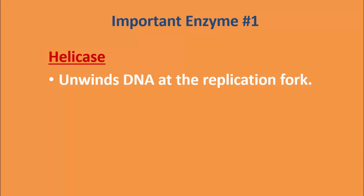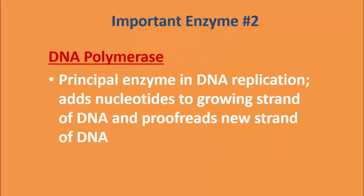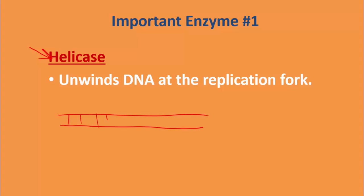Important enzyme number one is helicase. Helicase unwinds DNA at the replication fork — think of helicase as a zipper. If DNA were a ladder, where the support structures are made of deoxyribose sugar and phosphate groups and the rungs are made of the bases, helicase is the enzyme that comes in like a zipper and breaks all of those hydrogen bonds, giving us two individual strands.